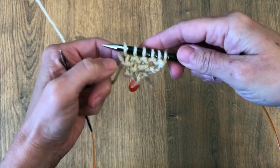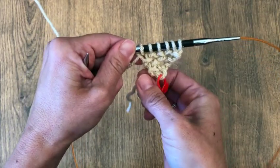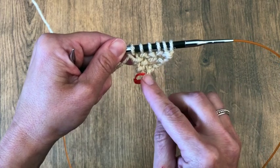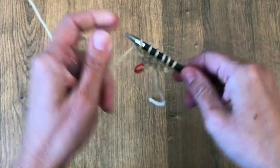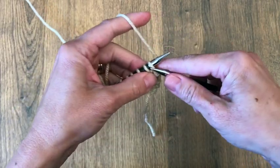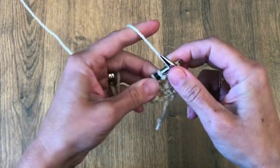And you can see how we have a straight edge growing here, working up here, and our increase edge is all on this side. So we will continue the simple two-row repeat, knitting all on the back.